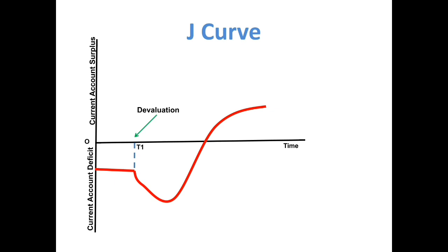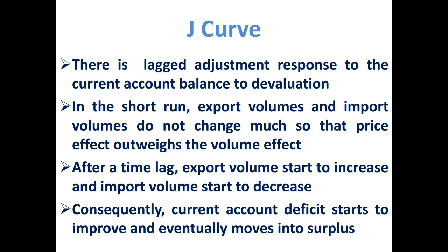The J-curve says that even though devaluation initially worsens the current account deficit, it can ultimately improve. There is a lagged response of the current account balance to devaluation. In the short run, export volume and import volume do not change much, so the volume effect does not respond and the price effect outweighs the volume effect. But after a time lag, export and import volumes tend to respond. Consequently, the current account deficit starts to decline and improve, and eventually the country can move towards surplus. So initially there will be a deterioration, but ultimately it leads to an improvement.